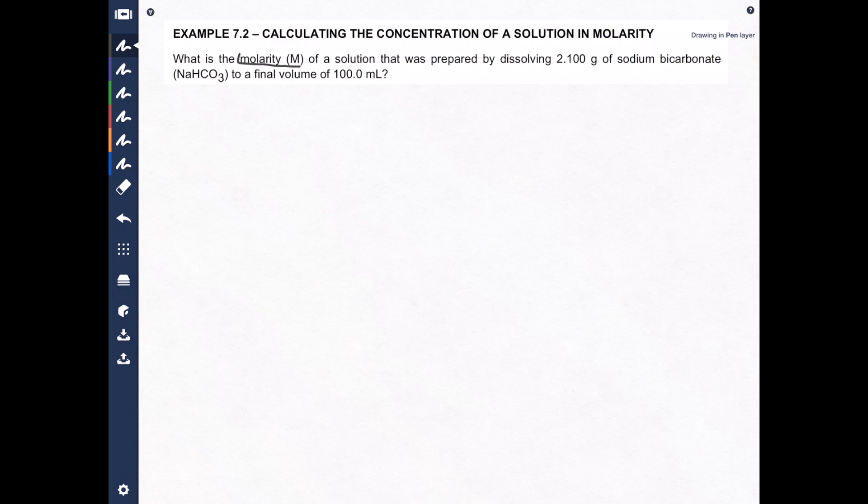First of all we have to calculate molarity so let's circle that and let's just write down capital M equals mole solute over liters of solution. So it's the moles of a solute divided by the total volume of the solution in liters.